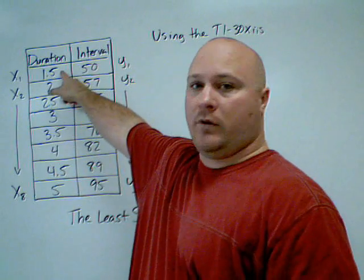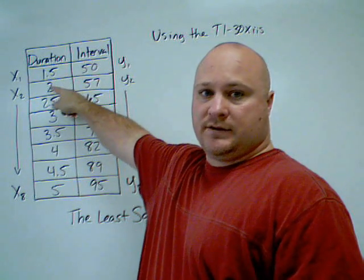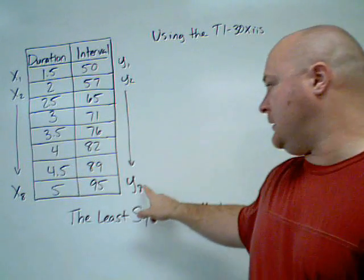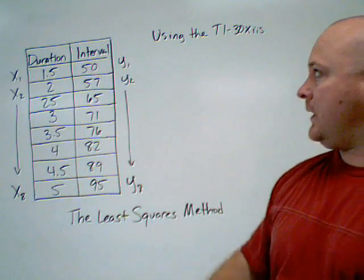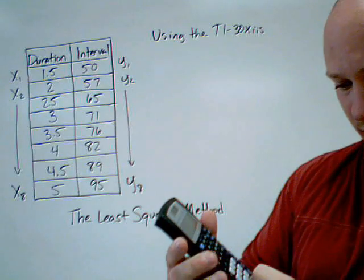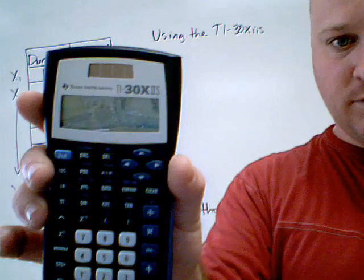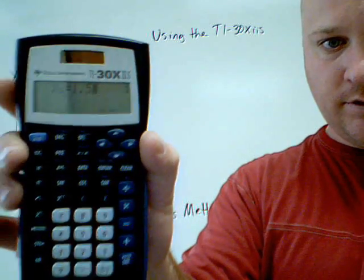x2 will be 2, and so forth, where we have x8 and y8. Once we press enter 1.5, so I've got 1.5 entered there for x1.